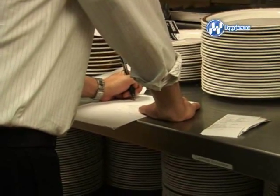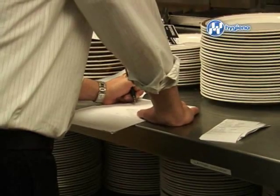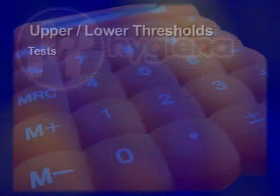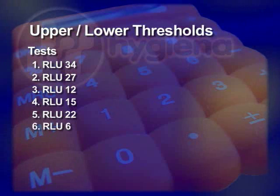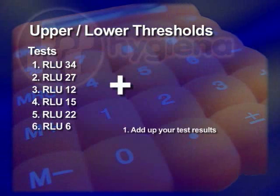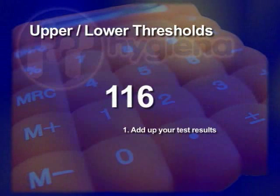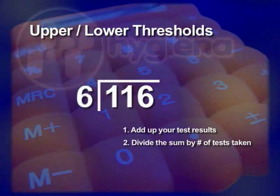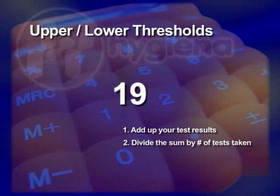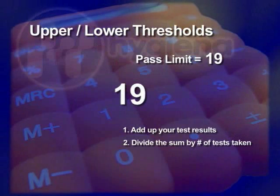After you have performed 5-10 tests, some basic math will be required to find your upper and lower thresholds. To calculate your pass and fail limits, first add up the RLU numbers from the 5-10 tests you took from around your facility. Next, divide your sum by the number of tests taken. The resulting number is your average RLU. This is your pass limit.